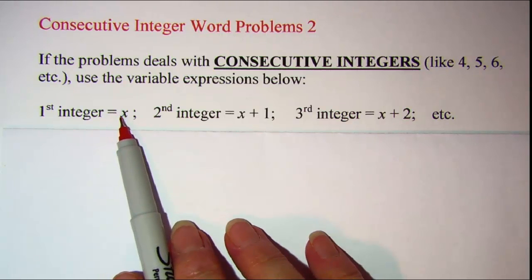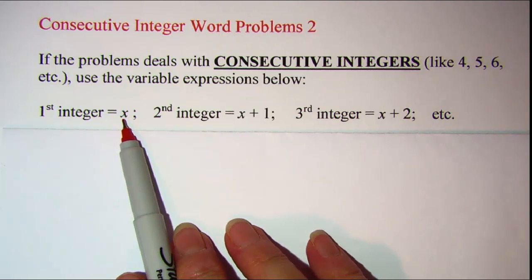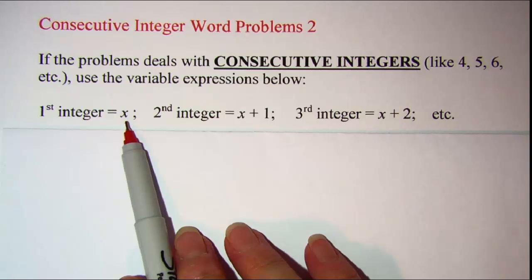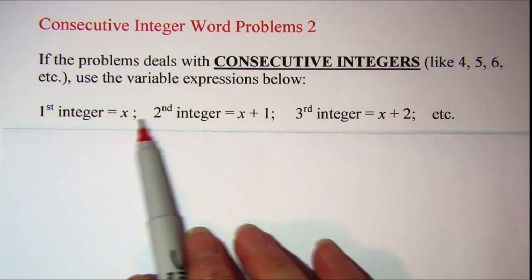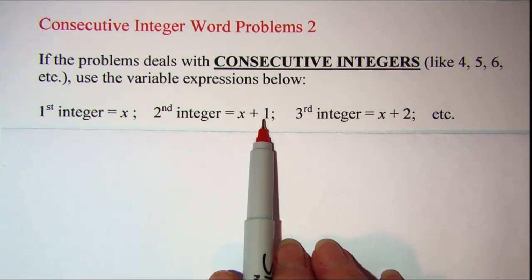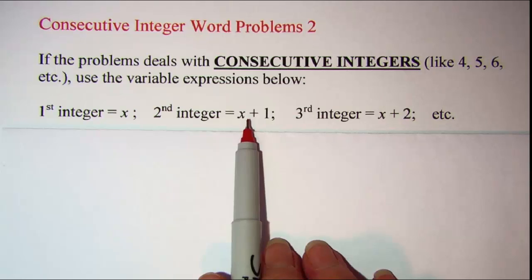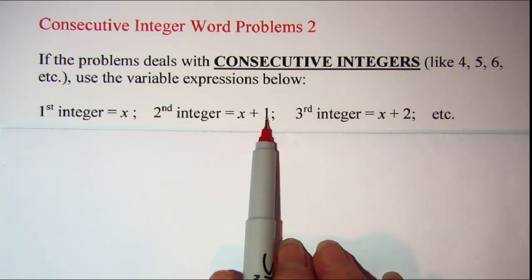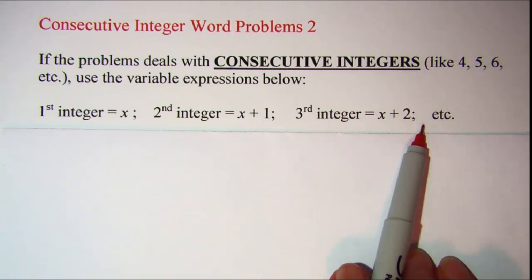For the first integer we'll let that be x, and then you just add 1 to get to the next consecutive integer, so x plus 1, and then add another one to get to the third integer, so adding 1 onto this expression gives x plus 2, etc.